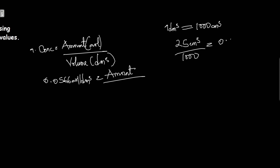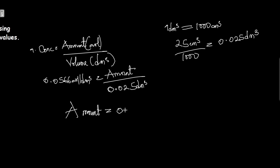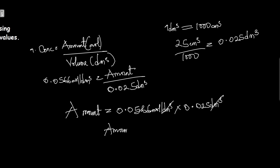So we have 0.05 mole per dm³ as our concentration. Multiplying concentration by volume: amount equals 0.05 mole per dm³ times 0.025 dm³. When you multiply these together, your amount equals 0.00125 mole. This is the amount of sodium carbonate in 25 cm³ of B.